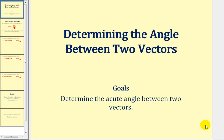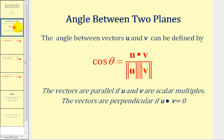Welcome to a lesson on determining the angle between two vectors. The angle between two vectors u and v can be defined by cosine theta equals u dotted with v, divided by the magnitude of u times the magnitude of v. We will prove this formula in a different video; this video will just provide examples of determining theta. We should remember that the vectors are parallel if u and v are scalar multiples of one another, and that if u dotted with v equals zero, the two vectors are orthogonal or perpendicular.